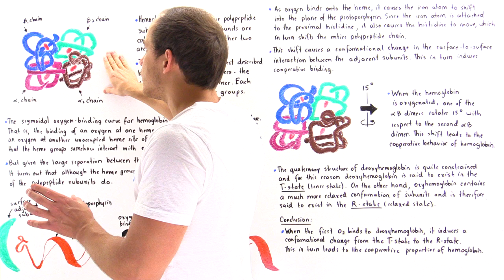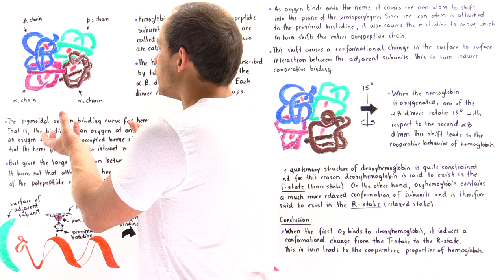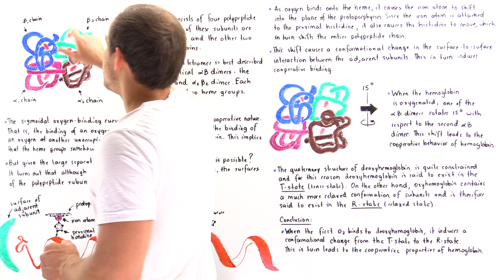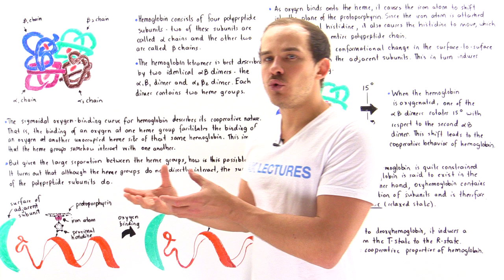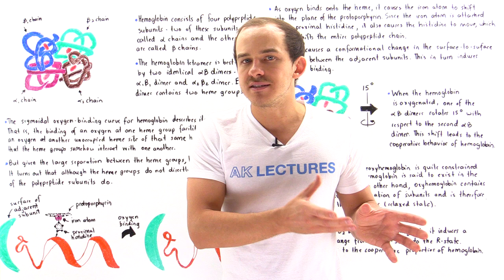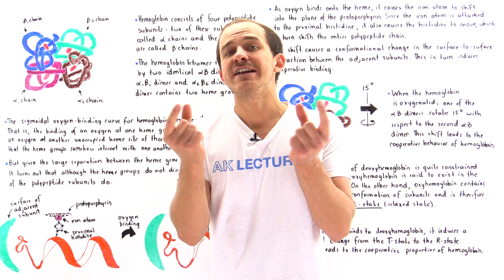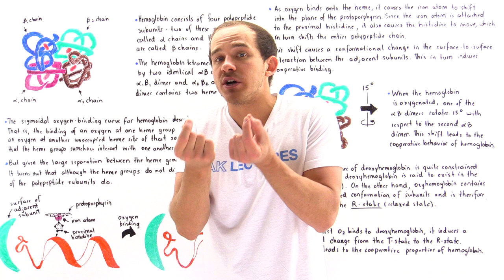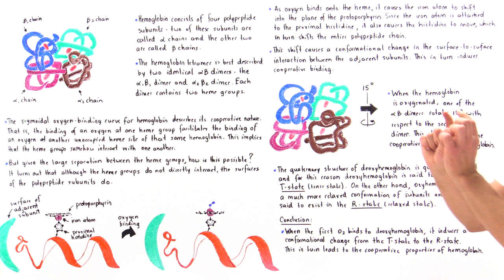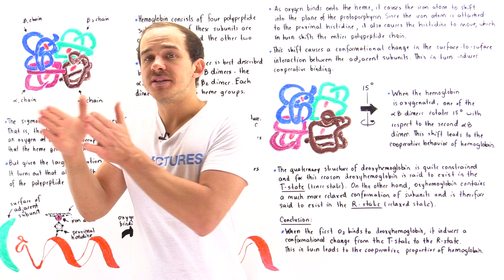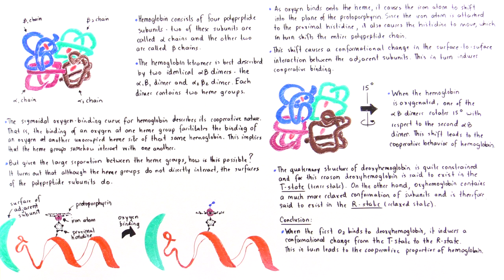This explains why we examine hemoglobin as consisting of two dimers — the alpha-1, beta-1 and the alpha-2, beta-2 — rather than four individual polypeptide chains. When the molecule goes from the tense state (deoxyhemoglobin) to the relaxed state (oxyhemoglobin), the two alpha-beta dimers rotate 15 degrees with respect to one another. This rotation is what causes the cooperative behavior and drives the shift from the T state to the R state. So when hemoglobin is oxygenated, one alpha-beta dimer rotates 15 degrees with respect to the second alpha-beta dimer.